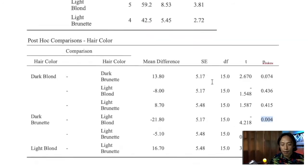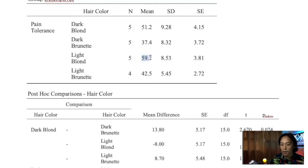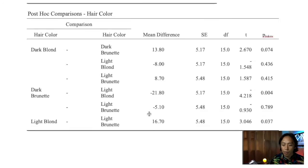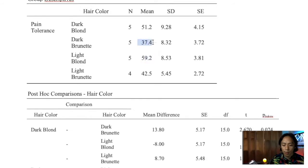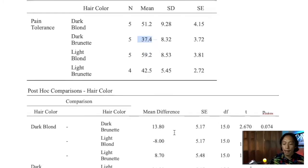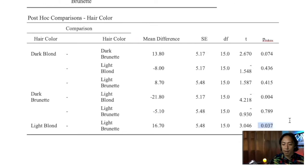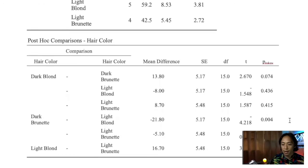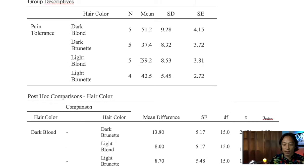Light blondes, with a mean of 59.2, have higher pain threshold compared to dark brunettes, who had an average pain tolerance of 37.4. We also find a significant difference between light blondes and light brunettes, with a p-value of 0.037, comparing 59.2 for light blondes to 42.5 for light brunettes. Otherwise, no other significant differences were found.